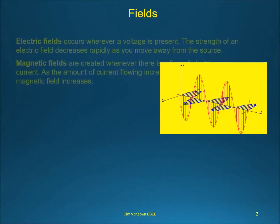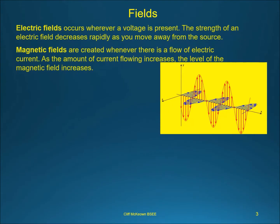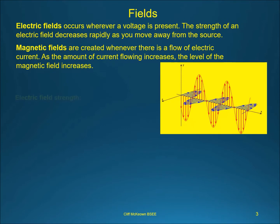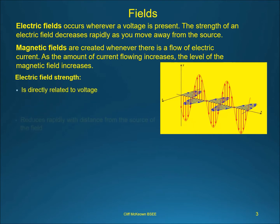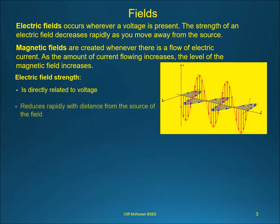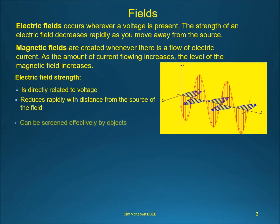Electric fields occur wherever a voltage is present. The strength of an electric field decreases rapidly as you move away from the source. Magnetic fields are created whenever there is a flow of electric current. As the amount of current flowing increases, the level of the magnetic field increases.